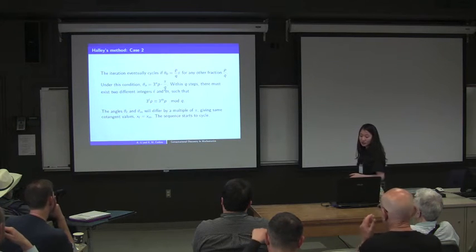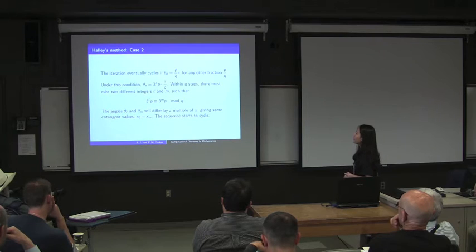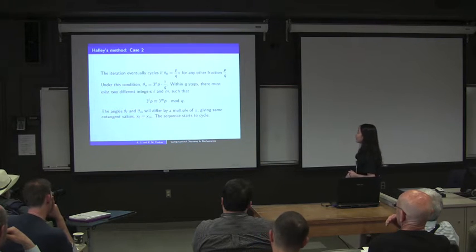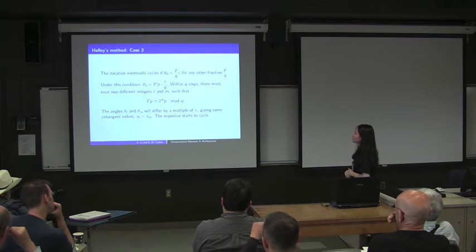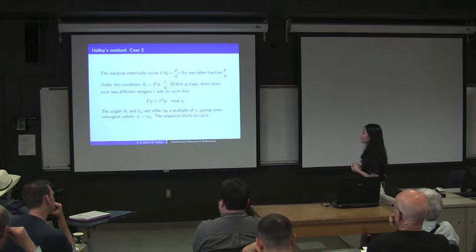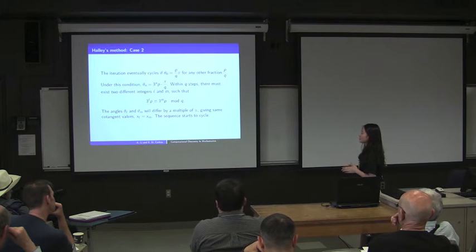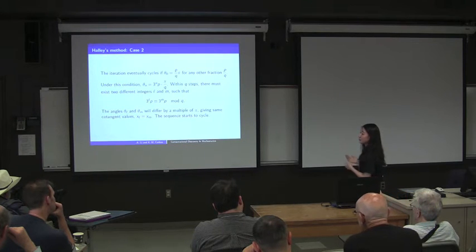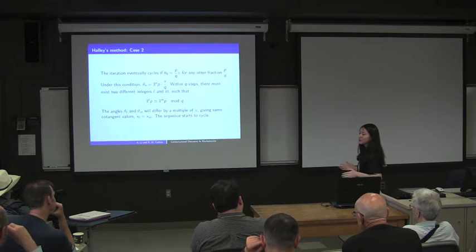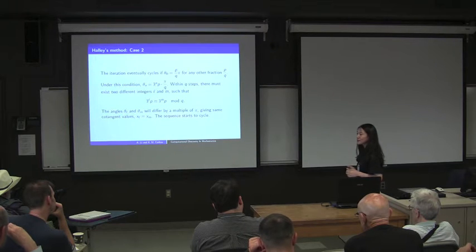The second case is the iteration eventually cycling. If the initial angle is a fractional multiple of π, other than kπ over 3ⁿ, then we have θm equal to 3ᵐ times the initial fraction times π over q. Within q steps there must exist two different integers 3ˡp and 3ᵐp differing by a multiple of q. The angles then differ by a multiple of π, giving the same cotangent values — meaning xl equals xm and the sequence starts to cycle.